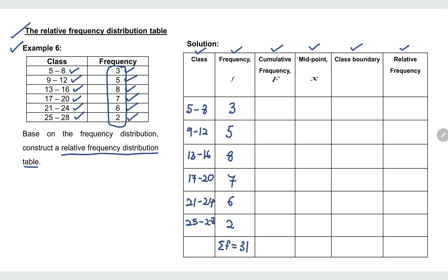Now let's find the cumulative frequency. The cumulative frequency of the first class equals its frequency, which is 3. For the second class, take 3 plus 5, which equals 8. For the third class, take 3 plus 5 plus 8, which equals 16. Repeating this process, you should get 23, 29, and 31.